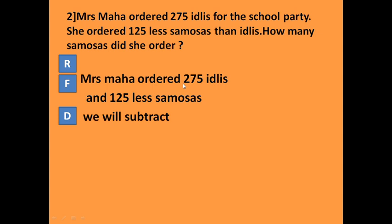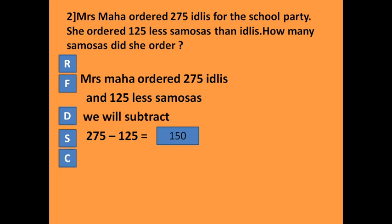We decide to subtract, so we solve: 275 minus 125. Subtracting: 5 minus 5 is 0, 7 minus 2 is 5 (after borrowing gives 1), and the result is 150. So Mrs. Maha ordered 150 samosas. To check the answer, we add 150 plus 125 — if the answer is 275, it is correct. And it is correct.